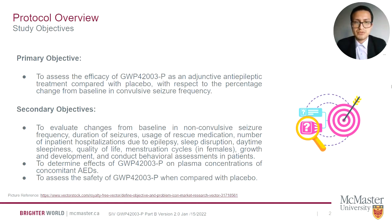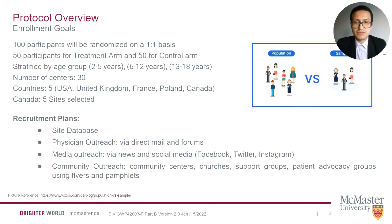The secondary objectives are to evaluate changes from baseline in seizures, use of rescue medication, hospitalization, sleep evaluation, quality of life, menstruation, development, behaviors, plasma concentration of concomitant antiepileptic drugs, and assess the safety of the study drug. The enrollment goal is 100 participants, 50 per each arm, with participation of 30 centers distributed in five countries, with five sites in Canada.